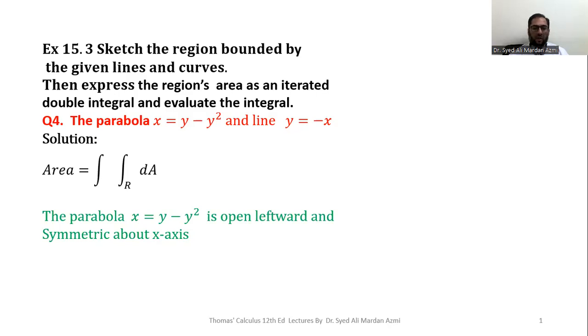Now, the parabola x = y - y² is open leftward and is symmetric about x-axis. How can we know it? Please note that in this equation of parabola, the coefficient of y² is negative. This negative sign indicates that the parabola is open leftward and the power of x is 1. This indicates that the parabola is symmetric about x-axis. So, these two things will give you the direction of parabola.